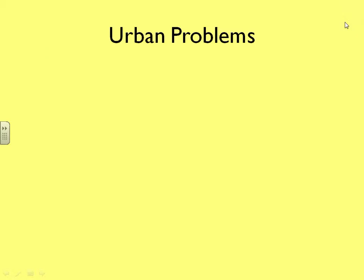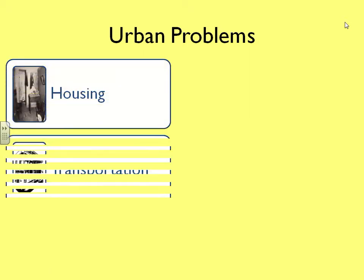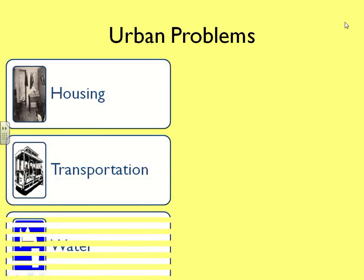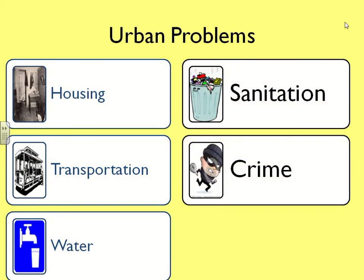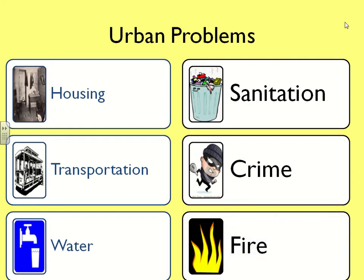Now the problems. There are six problems that were readily apparent in these cities: housing, transportation, water, sanitation, crime, and fire.